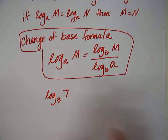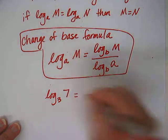Okay, log base 3 of 7. It's base 3, so I can't put it in the calculator. 3 to what power is 7? I have no idea. It would be somewhere between 1 and 2, because 3 to the 1 power is 3, and 3 to the 2 power is 9.